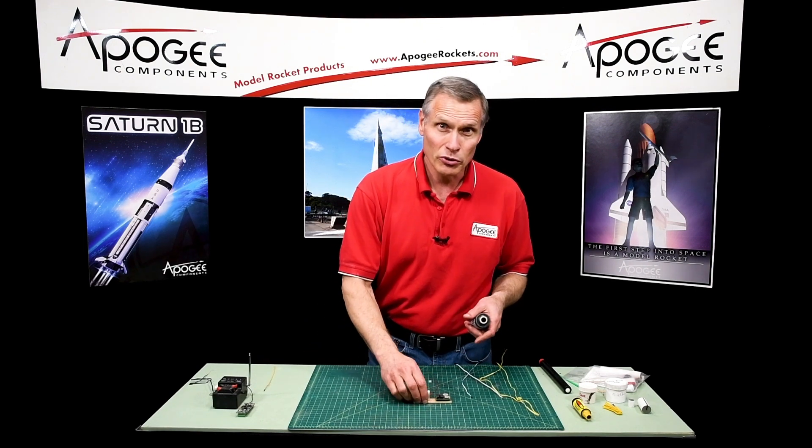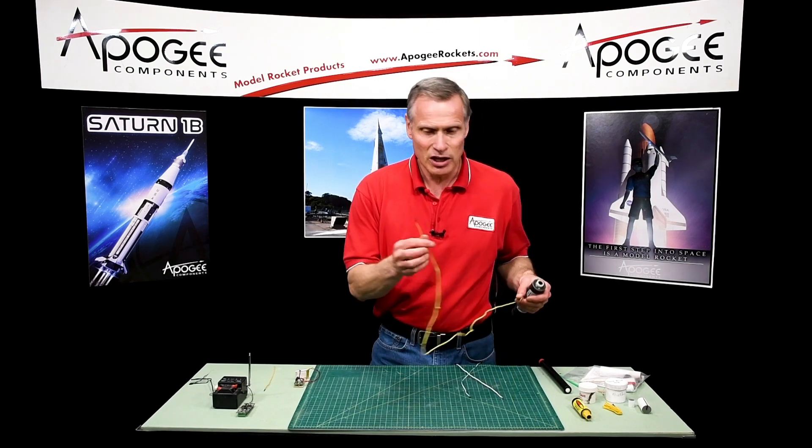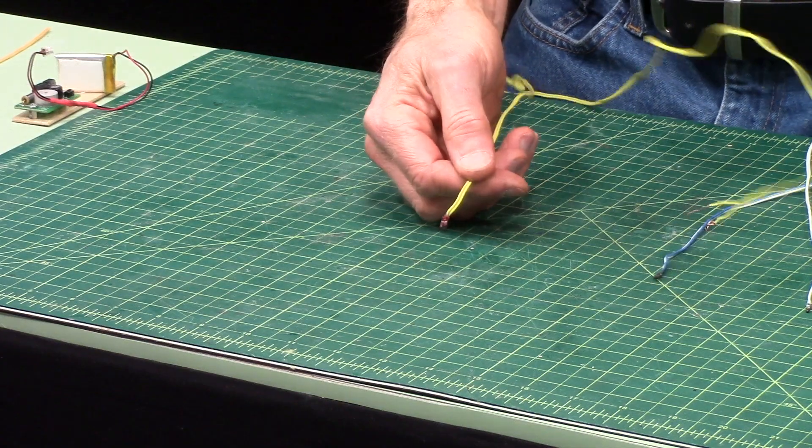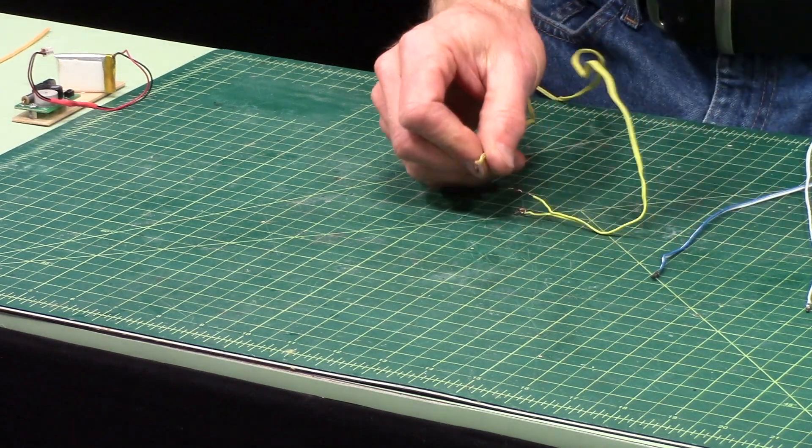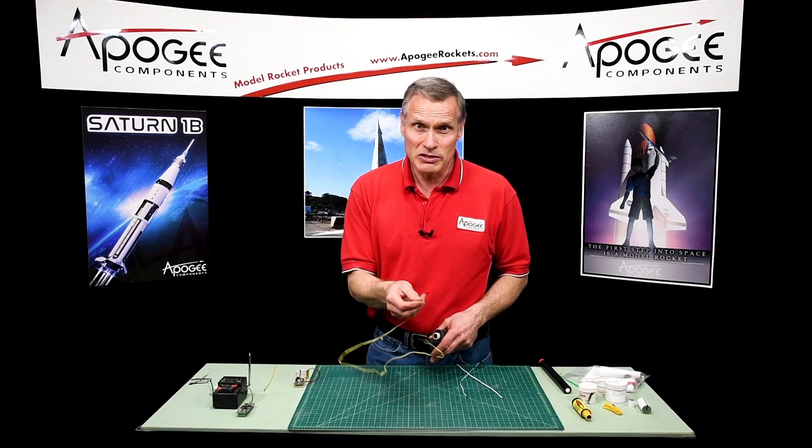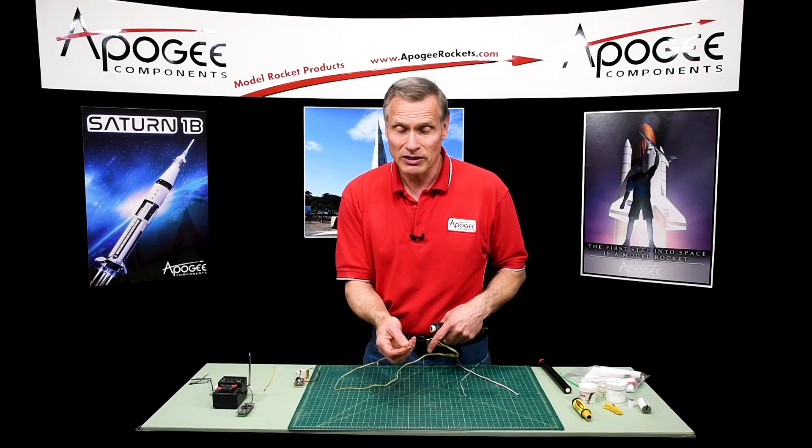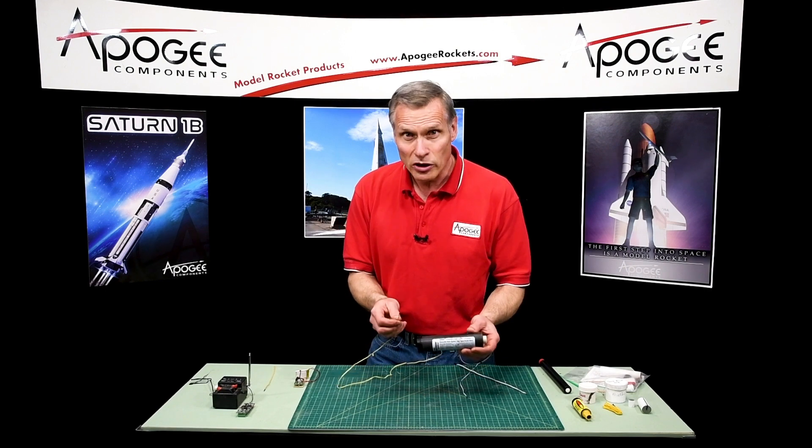So to stage successfully you have to use an e-match because these will fire off very quick very easily with just a little bit of voltage. But the problem is that these don't have enough heat to fire off the Aerotech motor. So what are you gonna do?